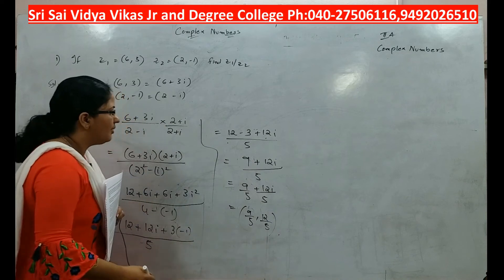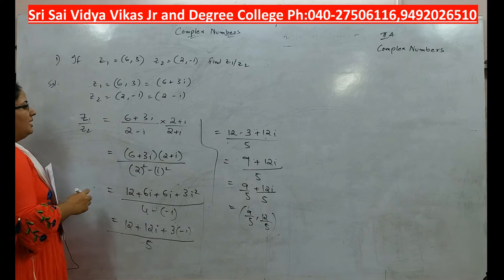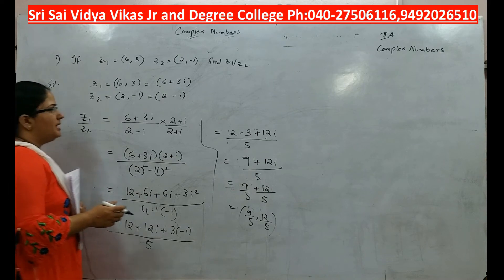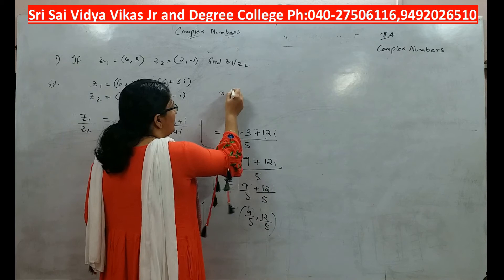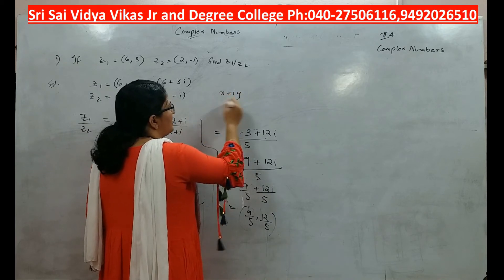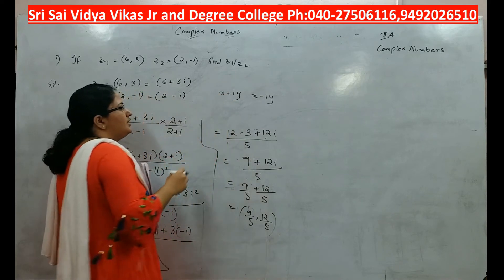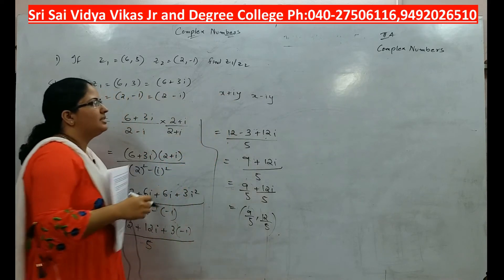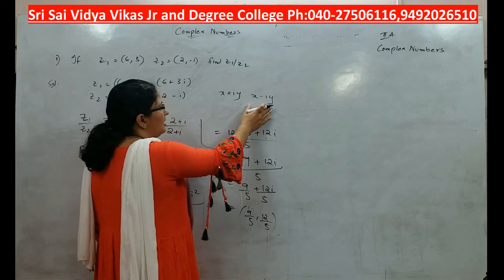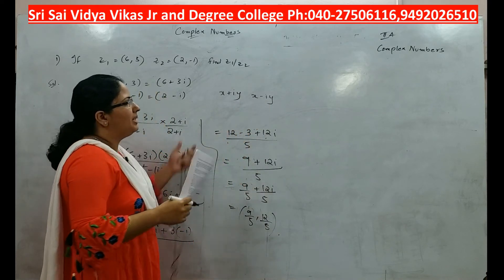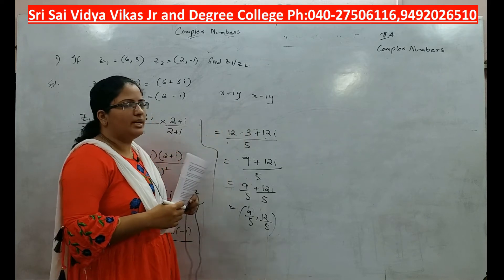That is about this problem. Now, the conjugate of a number — suppose if you have x plus iy, the conjugate of x plus iy is x minus iy. Because if you add these two complex numbers you get a real number, and if you multiply them you also get a real number. That is what a conjugate is.